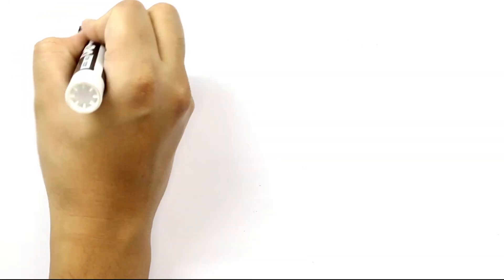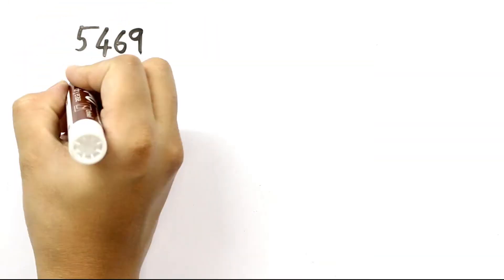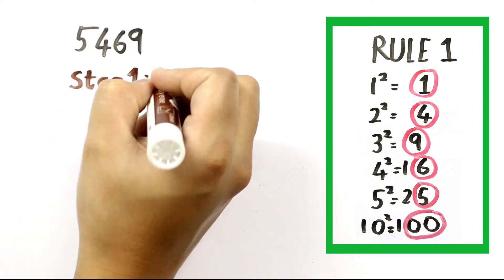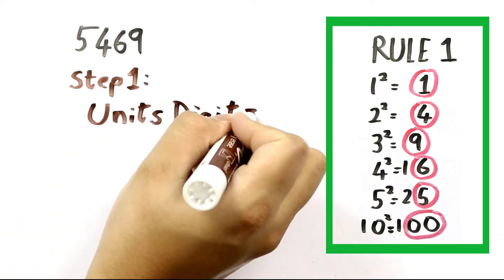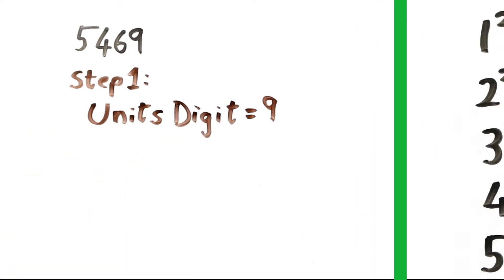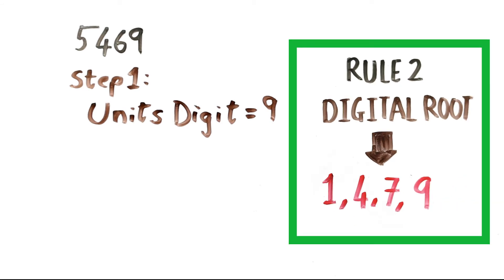Let's check the number 5469. Our first step is to check the unit's place of this number. Since it is 9, we can't rule out the possibility of it being a perfect square. Now our second rule says that its digital root should be 1, 4, 7, or 9 for it to be a perfect square. So let's find out.